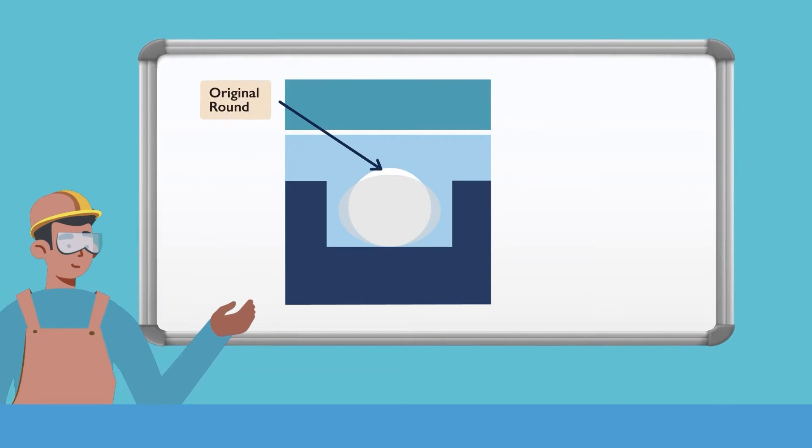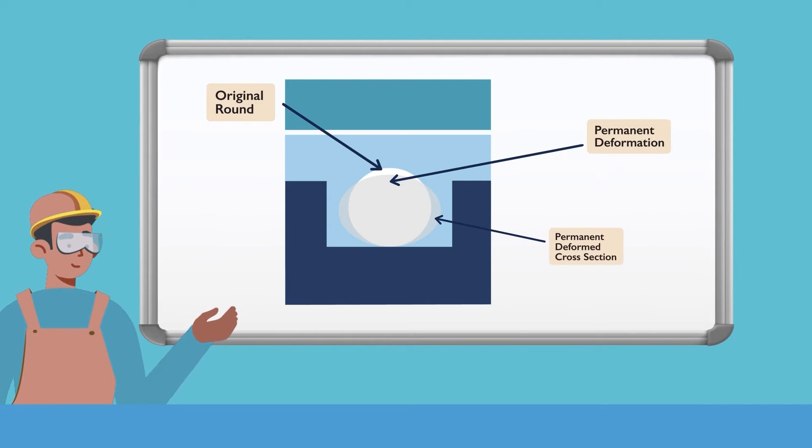Visually, an O-ring which has taken a set would appear less circular in cross-section, potentially with a flattened top and bottom surface after being forced to take the shape of the groove.